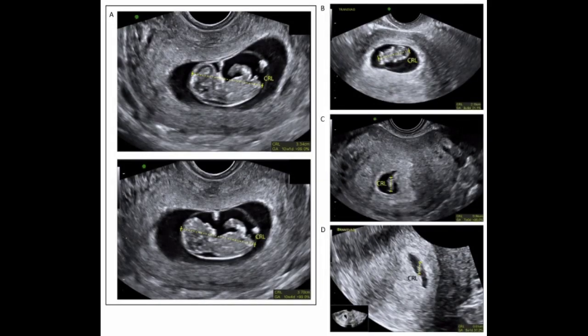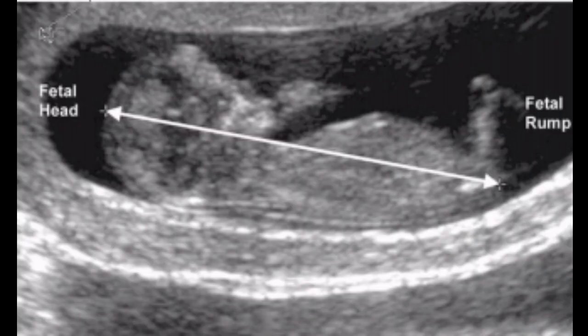Crown rump length is an ultrasound measurement used during pregnancy. The baby is measured in centimeters from the top of their head to the bottom of their buttocks. The limbs and yolk sac are not included in the measurement. The crown rump length is the longest length of the embryo or fetus measurable, excluding the limbs and yolk sac, and can be measured starting around 6 or 7 weeks of pregnancy up until 14 weeks.